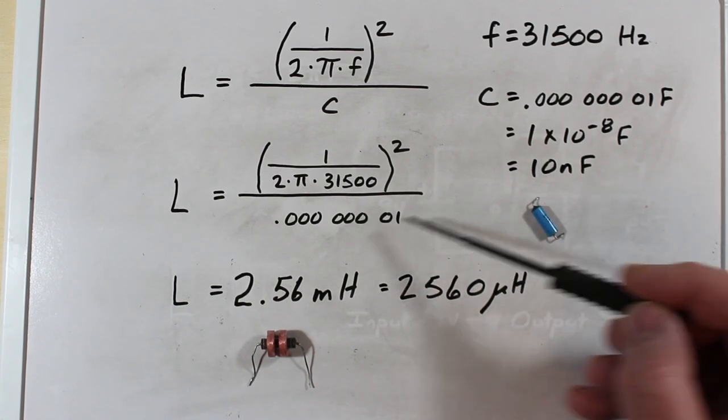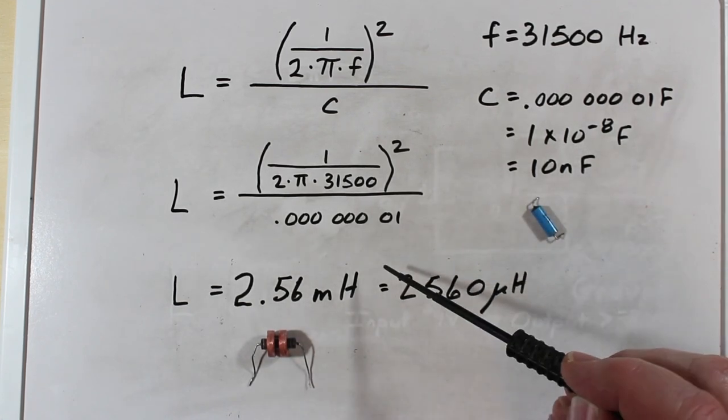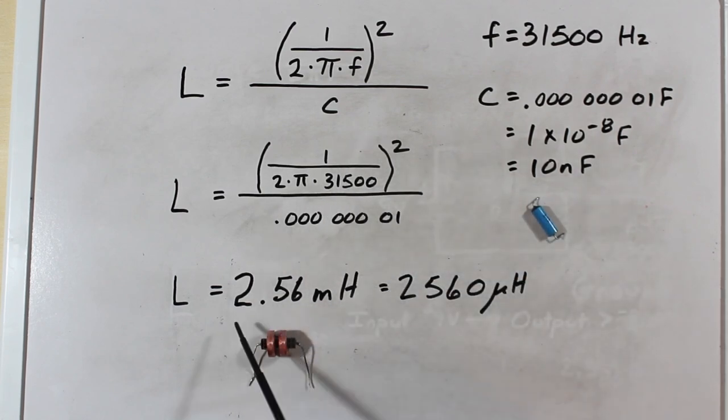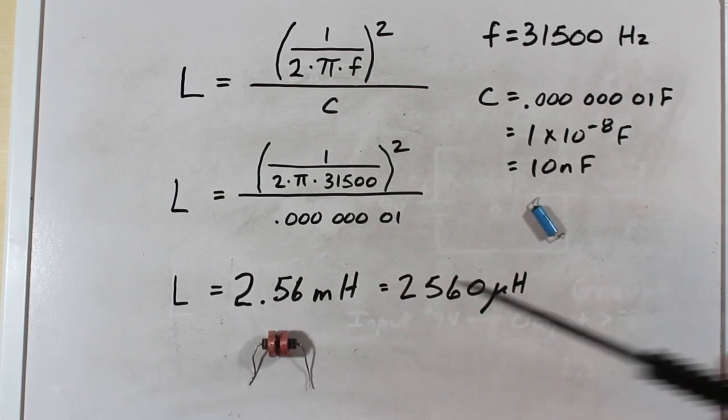Because as we do all this and do this on our calculator, we find out that we end up with a 2.56 millihenry inductor here. So now I know what that value is.